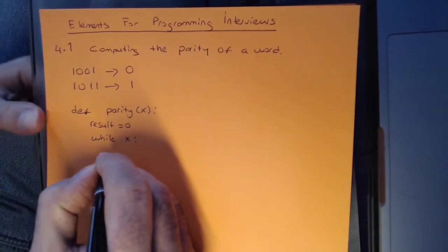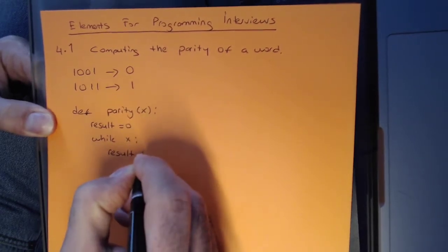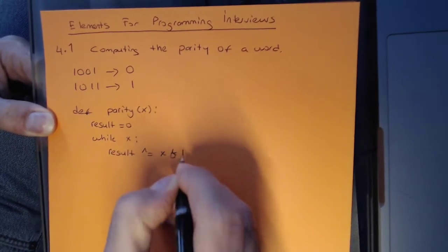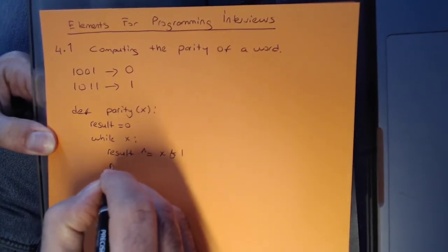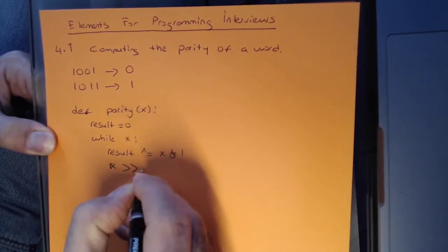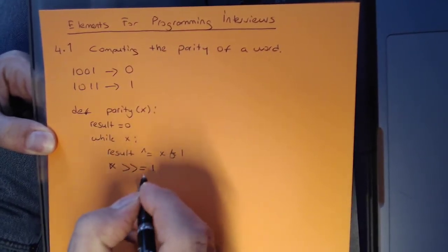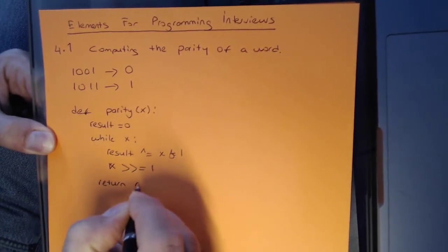And we're going to loop through each bit of a given number, and we're going to calculate our result, which is XORed with X AND 1. I will explain that in a second. And we go to the next bit by right-shifting X by 1, and then at the end returning the result.